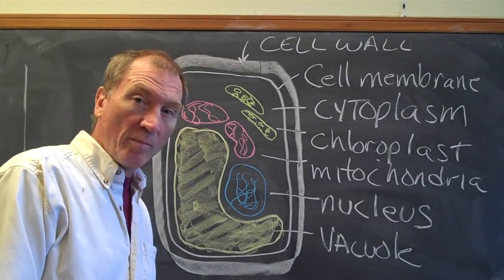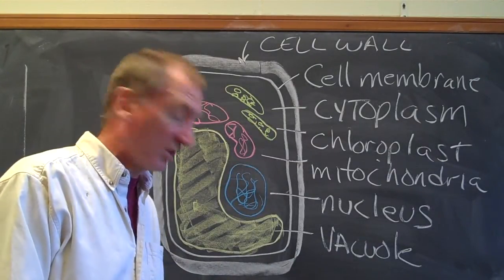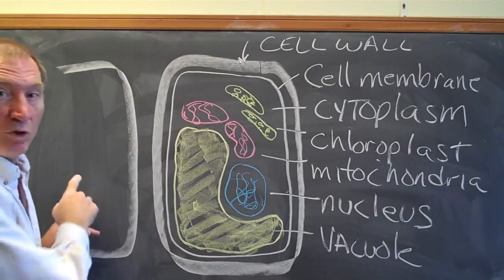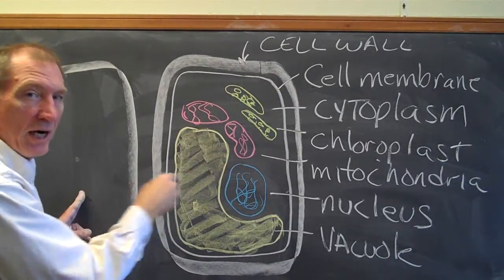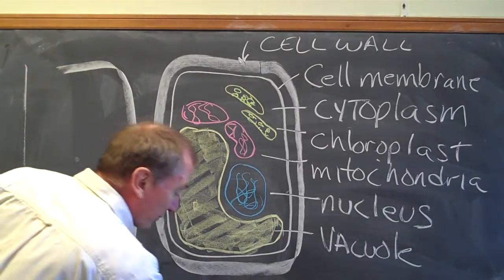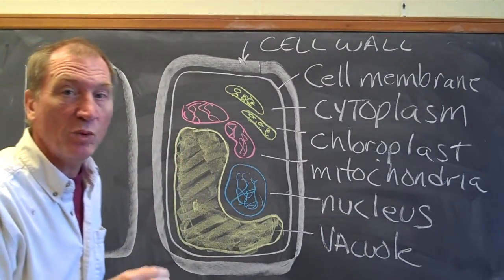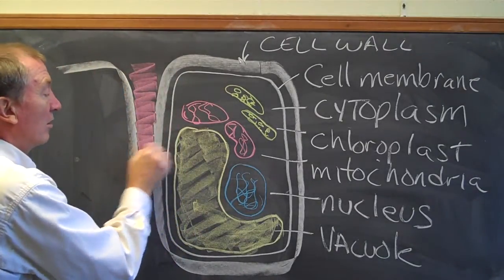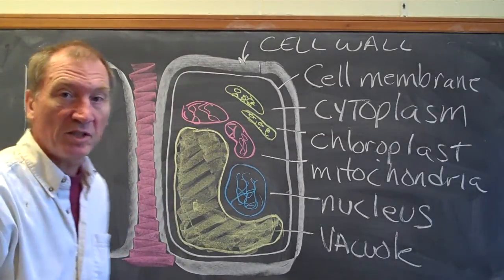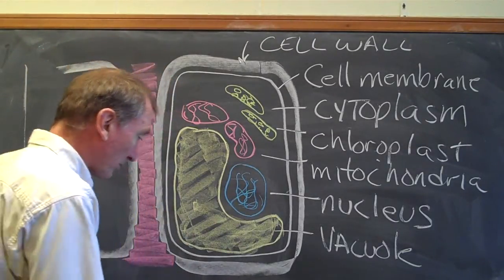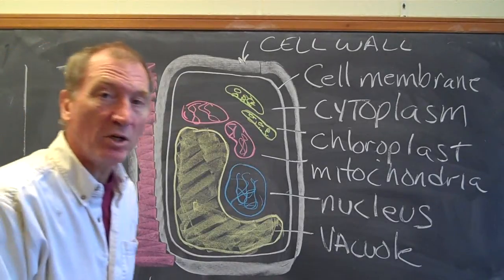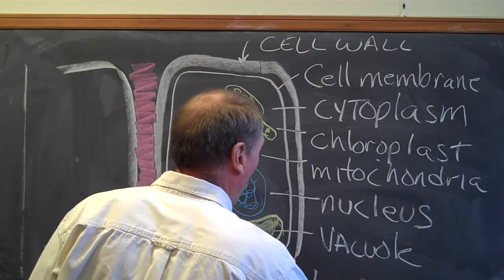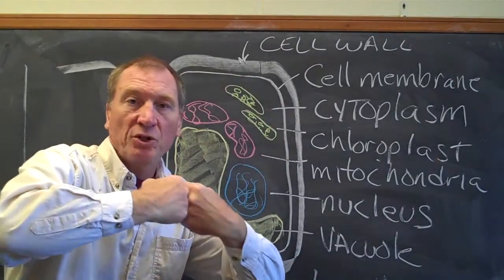Now there's one more part, or at least compound, that I want to show you that's actually outside of the cell. So what I'm drawing is the adjacent cell. So here's the cell we're diagramming the parts. Here's the cell next door. And in between them is a cement. And I'm going to show it in red. It's not red in nature. But this is the cement that holds the cells together. And this is called the middle lamella. And it cements two cells together.